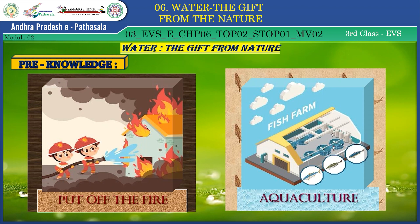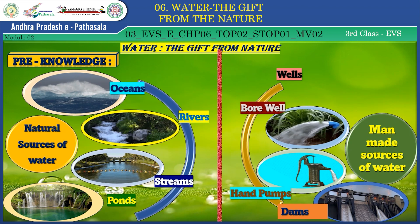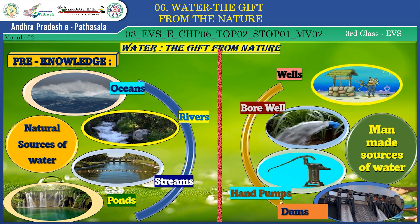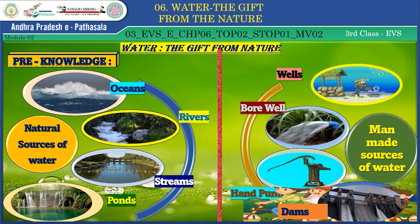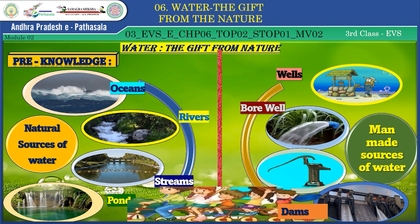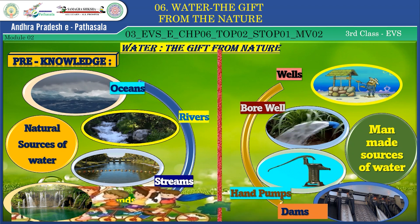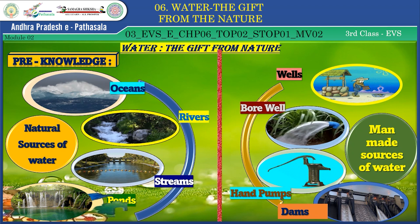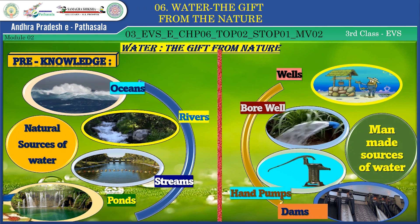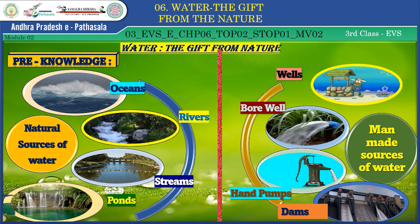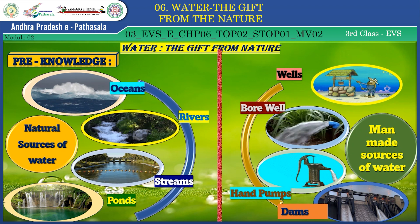This was all discussed in module 1. Now you have to tell me from where we are getting water. You already know the types of water resources. One is natural sources like oceans, rivers, streams, ponds and lakes. The other is man-made sources like wells, bore wells, hand pumps, dams and canals, etc.